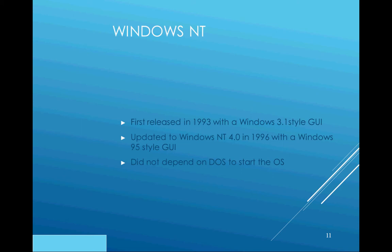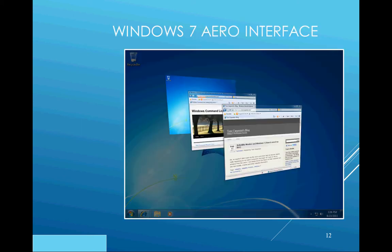Here's where we are today with the Windows 7 Aero interface. If you hold the Windows key and press the Tab button, you can navigate between open applications on your desktop by continuing to press Tab, then release it when you want to select the program you want.